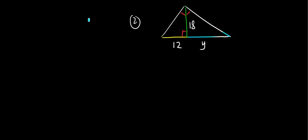Now, think about the altitude theorem says, in a right triangle, the altitude from the right angle to the hypotenuse divides the hypotenuse into two segments. In this case, it's 12 and y.